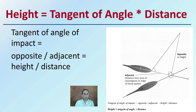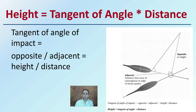So how does this look? The tangent of the angle of impact equals the opposite divided by the adjacent, which equals the height or distance. Using this simple math, we can determine that height: take the tangent of the angle, multiply it by the distance, and that gives the total height.